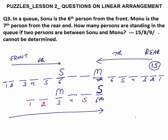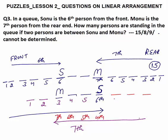Monu is 7th from the right end. Counting from the rear end: 1st, 2nd, 3rd, 4th, 5th, 6th, 7th — Monu is the 7th person. Everything is correct. Monu is 7th from the rear end, and in this second arrangement, if you count the total number of persons in the queue, the answer is 9.